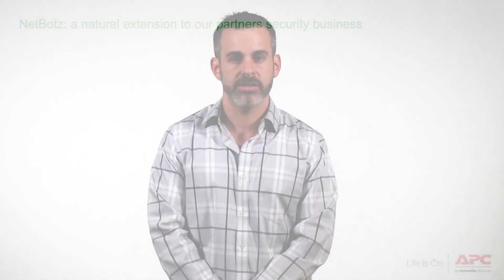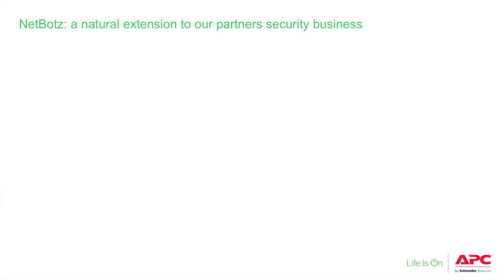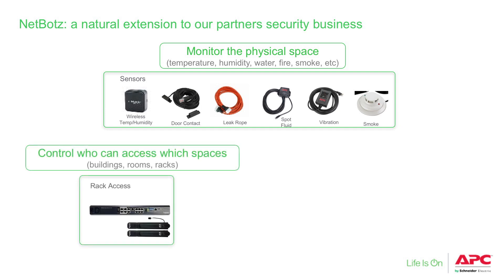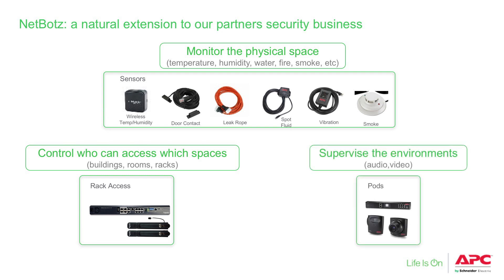We at APC can help you facilitate that discussion through our NetBots offer. NetBots allows you to do three critical things: first, it allows you to monitor the physical space — temperature, humidity, water, fire, and smoke. It allows you to control who can access the spaces — your buildings, your rooms, and your racks. And it allows you to supervise your environments through audio and video notifications.